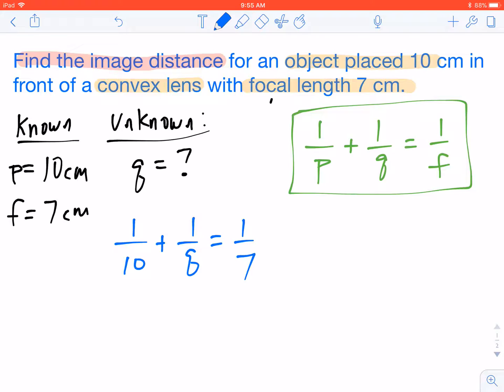So what we want to do is we want to be able to solve for q. So we've got to get 1 over q all by itself. In order to do that, we're going to have to subtract this 1 tenth on both sides. So that's going to give us a value 1 over q equals, I'm just going to punch this in my calculator real quick. And we're going to get a decimal value of 0.042.